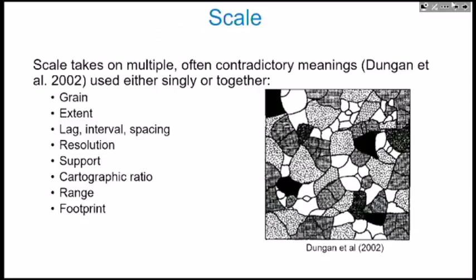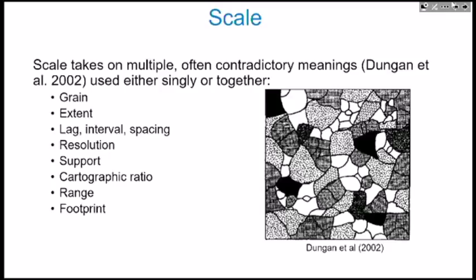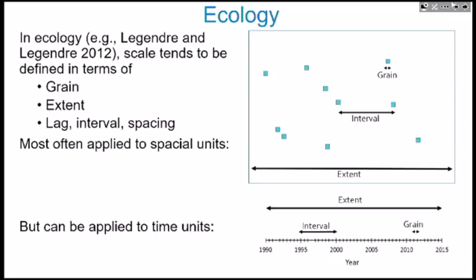What I want to do first is tell you what scale is, and it's not an easy thing to figure out. If you search for scale, you see lots of things pop up — often multiple contradictory meanings and terms used singly or together: grain, extent, lag, resolution. You see resolution a lot in remote sensing, and cartographic ratio in geography. In ecology, the main terms used for scale are grain and extent.